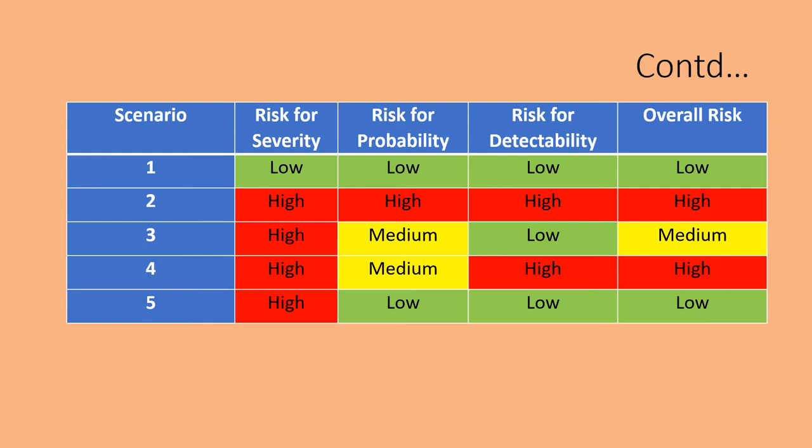See the last scenario 5. The risk for severity is high but the probability is very low — meaning it is very infrequent. The risk for detectability is also low, meaning the severity can be detected very well in the process. So the overall risk can be classified as low.